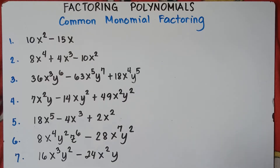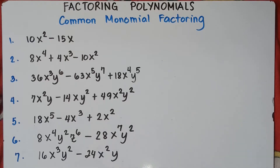To factor polynomials, the thing that we will do is: for the numbers, you need to find the GCF — the greatest common factor. And for the variable, just select the variable with the least degree, the variable with the least exponent.